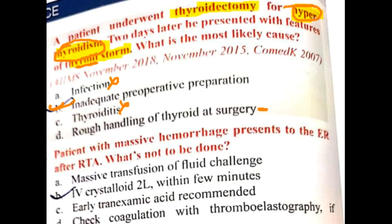Always before surgery in a patient with hyperthyroidism, we must bring the patient to euthyroid state to prevent thyroid storm. Thyroid storm is an emergency — you must treat immediately with non-selective beta blockers such as propranolol, give an anti-thyroid drug (the drug of choice is propylthiouracil), and if required, give corticosteroids as well.